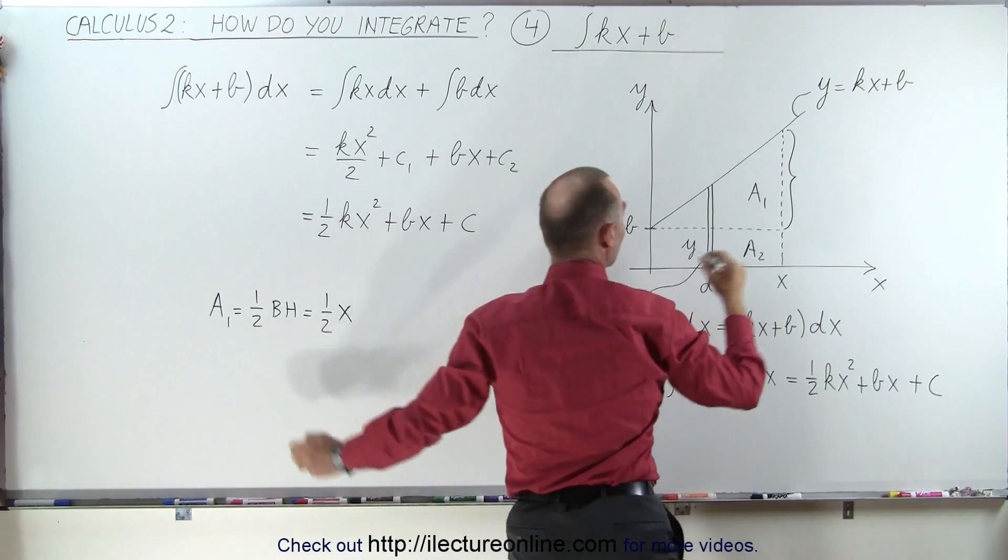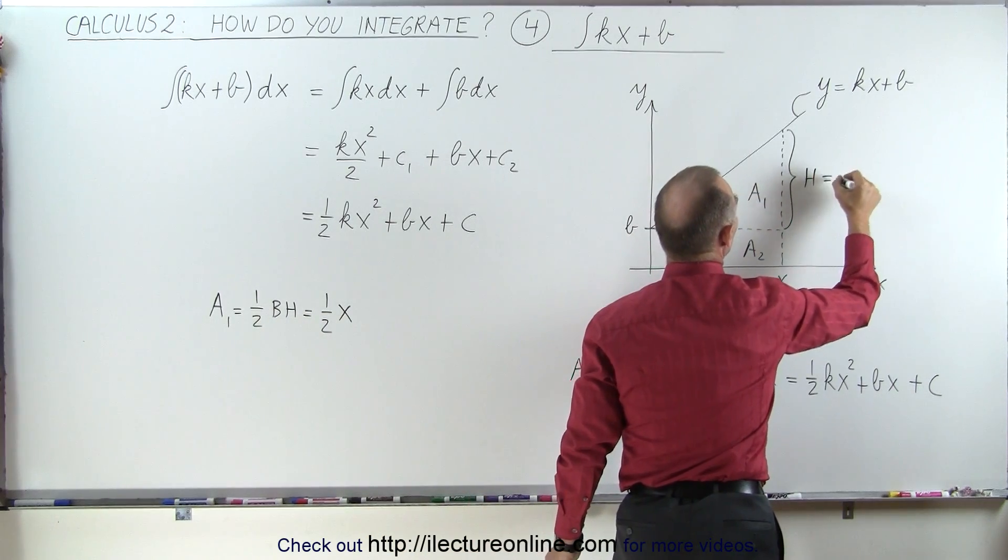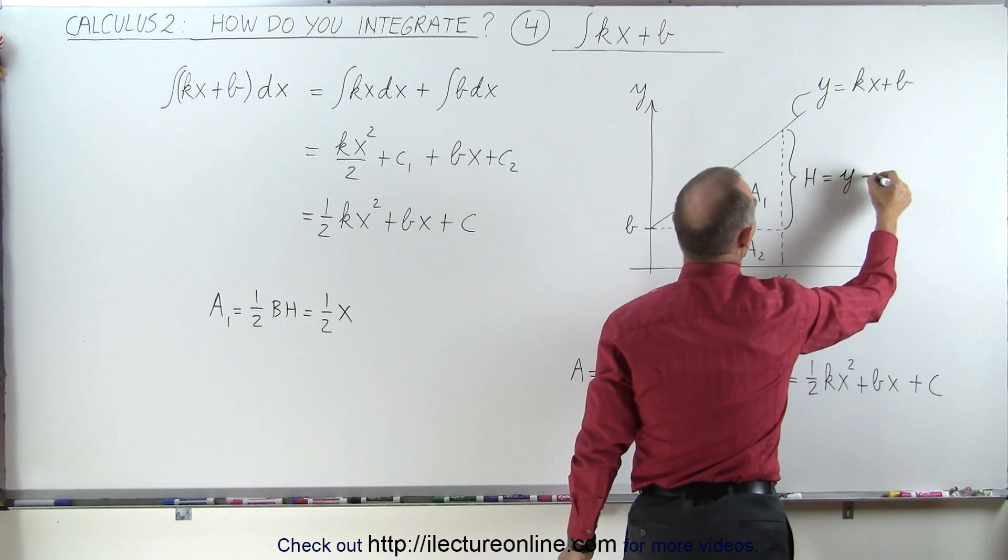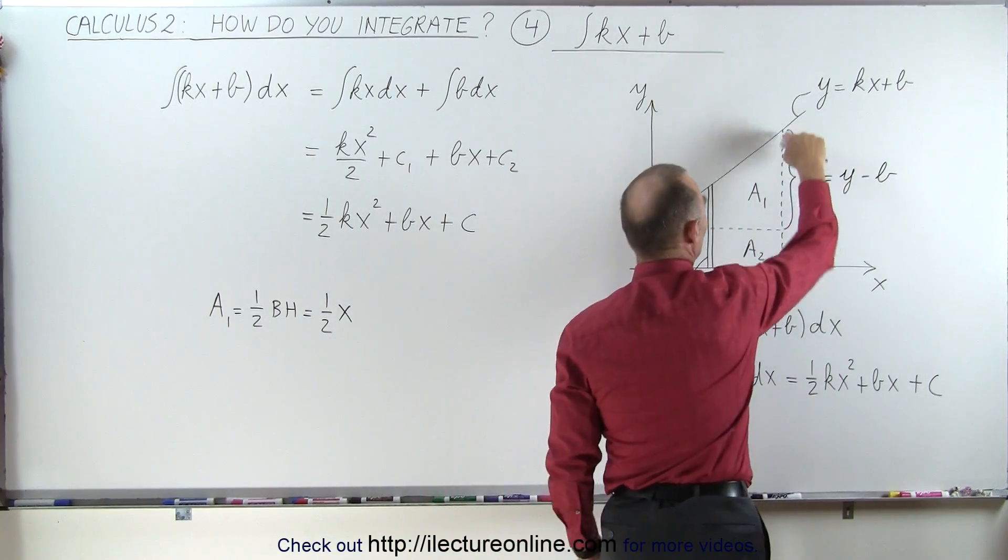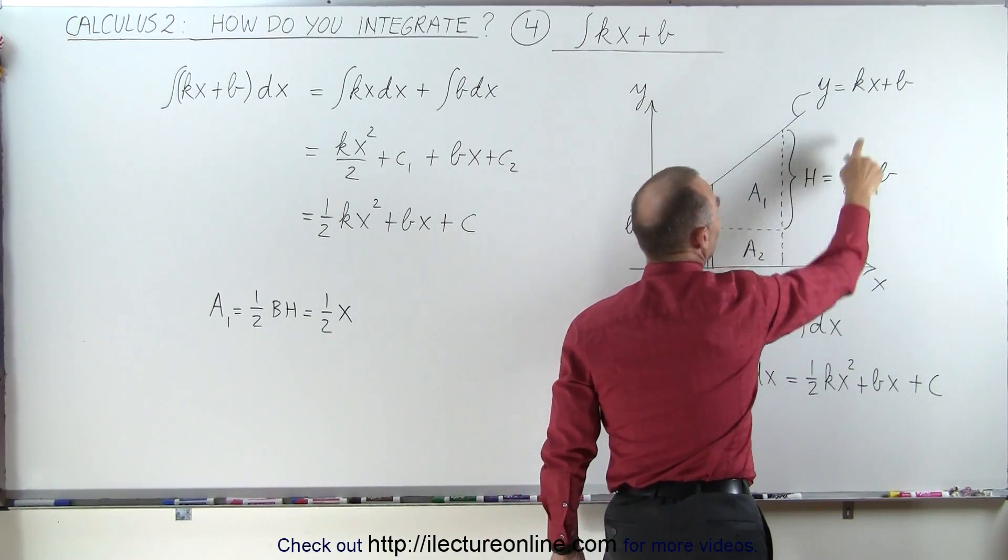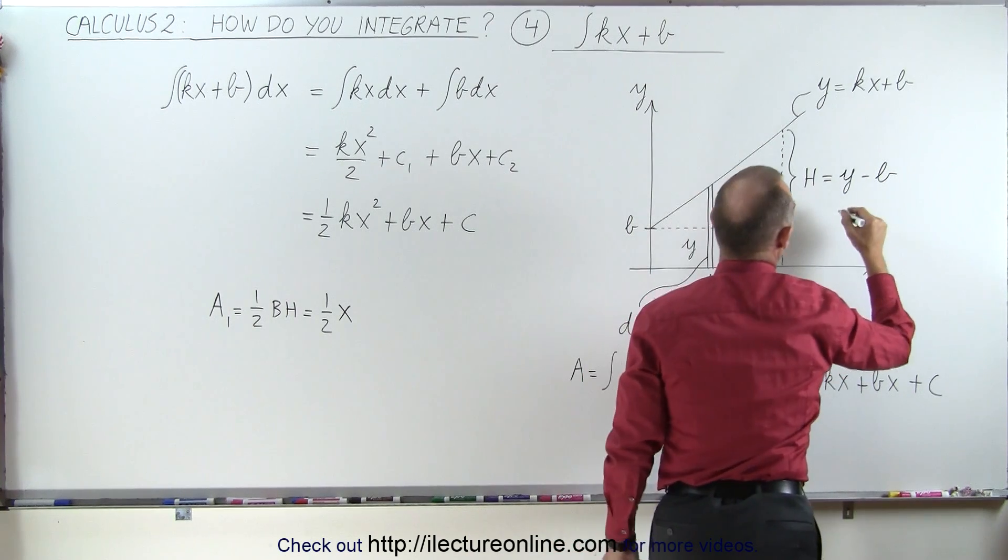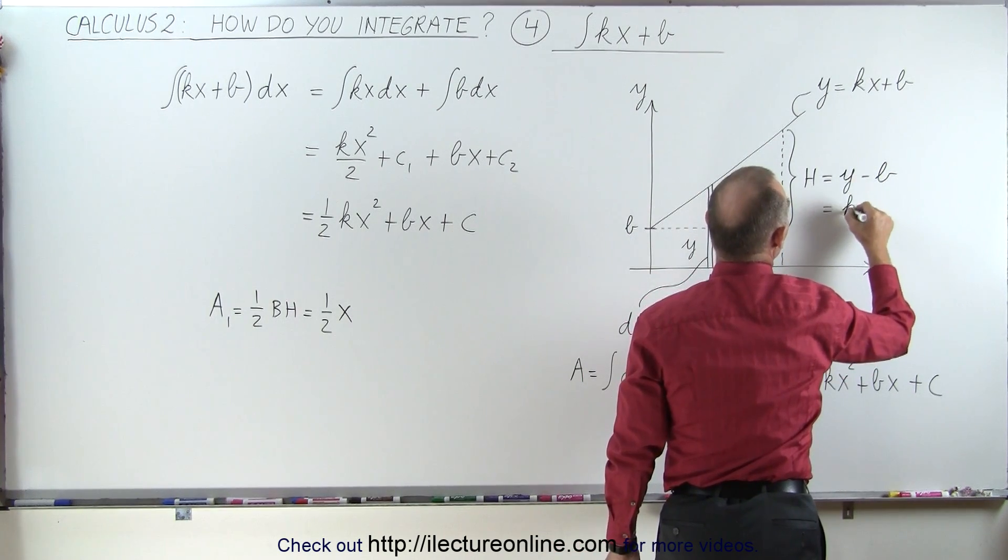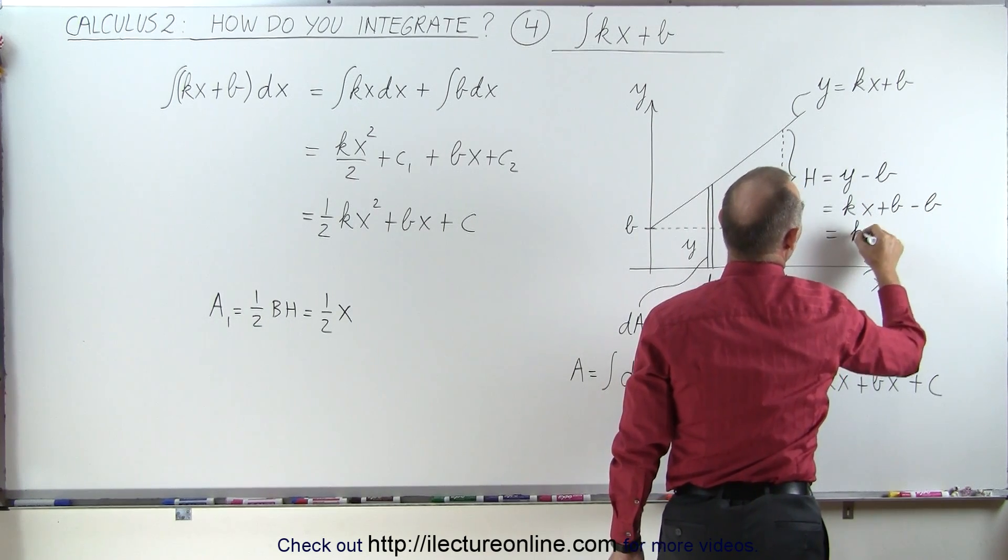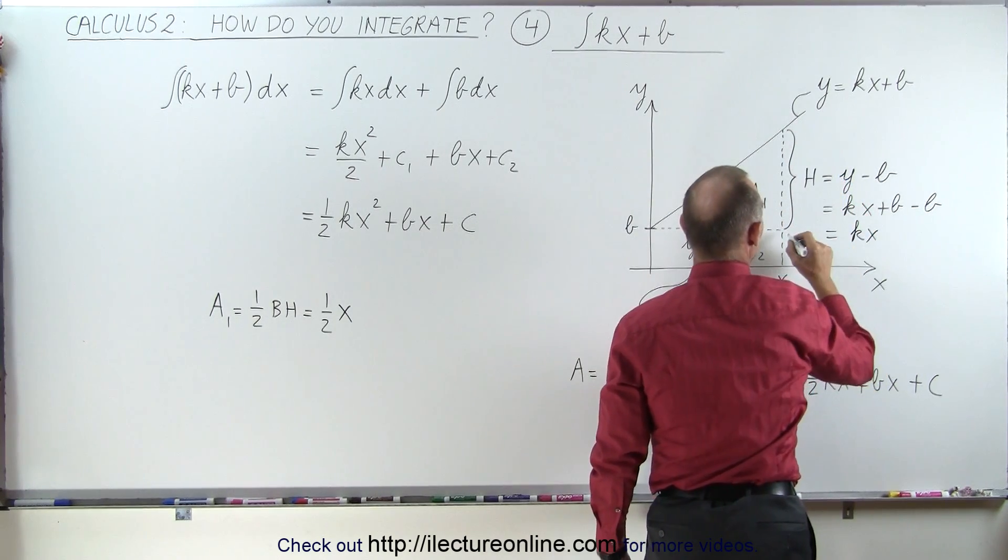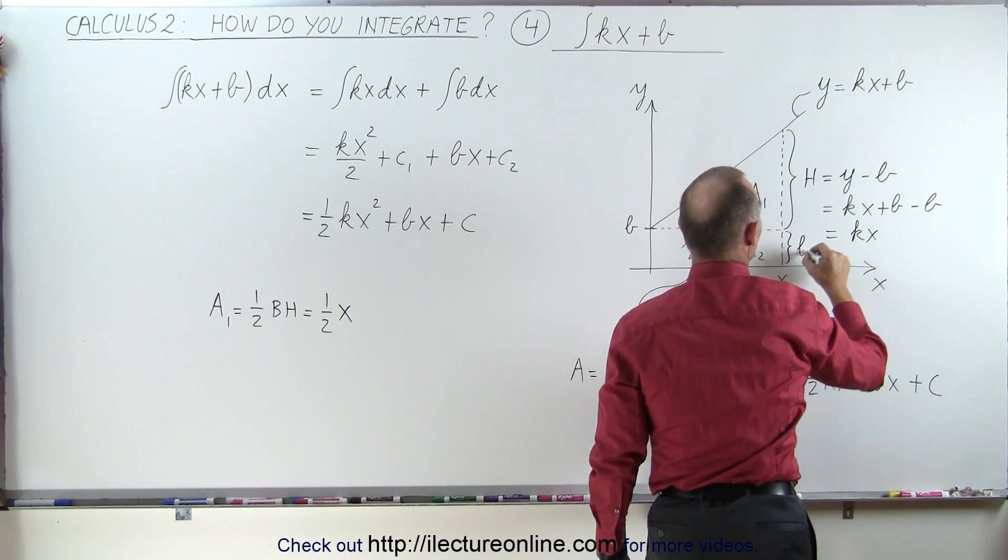That would be equal to the h right there, and h is equal to y minus b, because this is the distance b, and this is the distance y when x equals x. So this can be written as kx plus b minus b, which is equal to kx. So that's the height of my triangle.